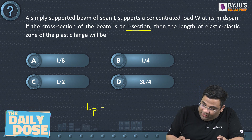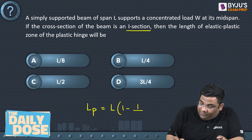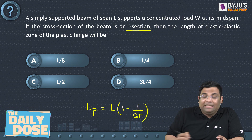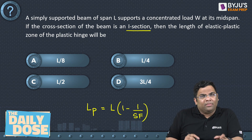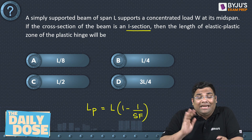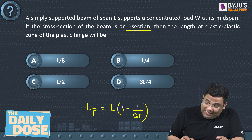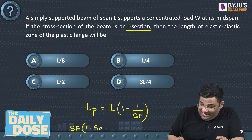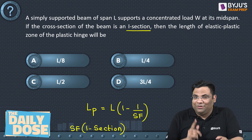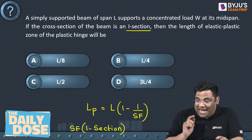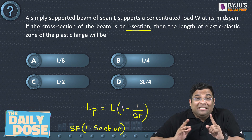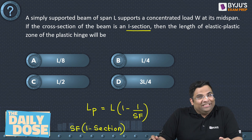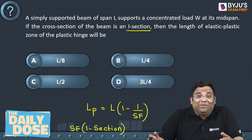For the homework, use the same formula for a point load acting at mid-span: length of plastic hinge = L × (1 − 1/shape factor). You need to find the shape factor for an I-section and then solve the question. Mention your answer in the comment section. Thank you very much, see you in another video.